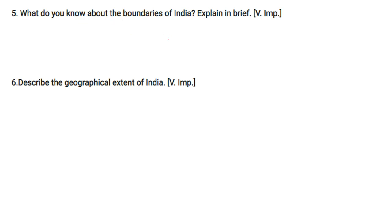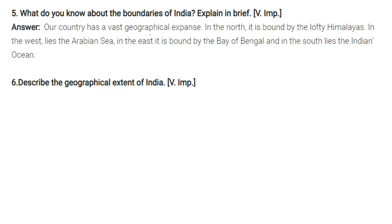What do you know about the boundaries of India? Our country has a vast geographical expanse from north to south and east to west. In the north it is bounded by the lofty Himalayas, in the west by the Arabian Sea, in the east by the Bay of Bengal, and in the south lies the Indian Ocean.